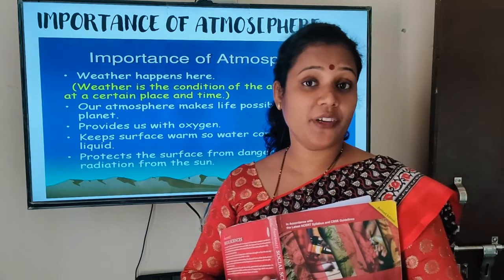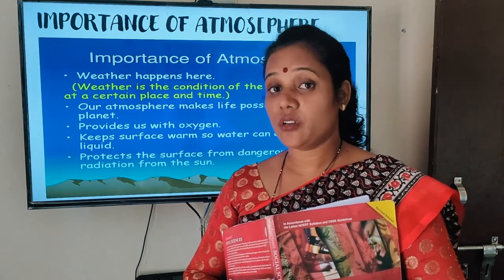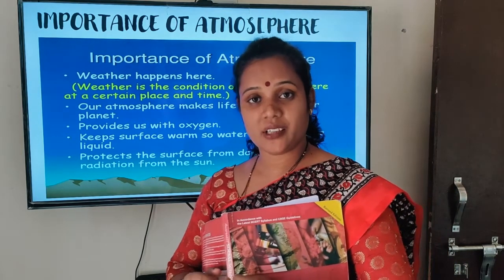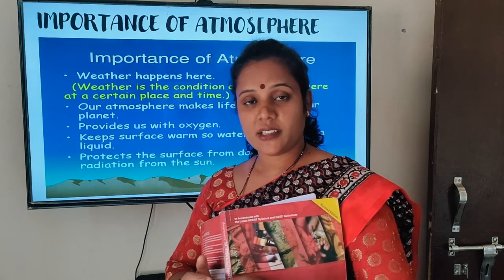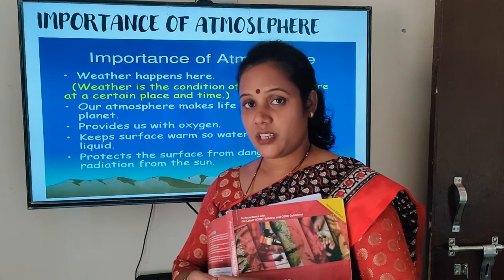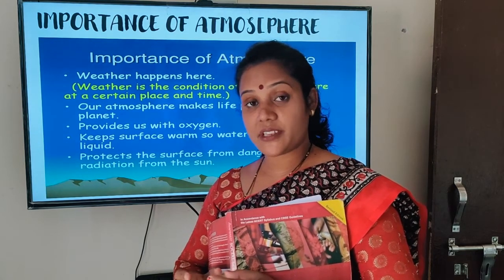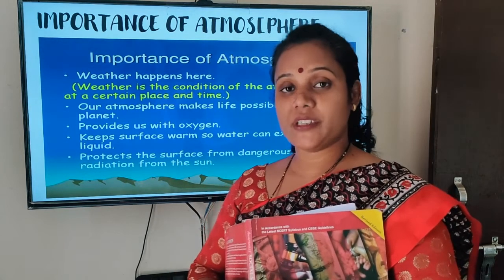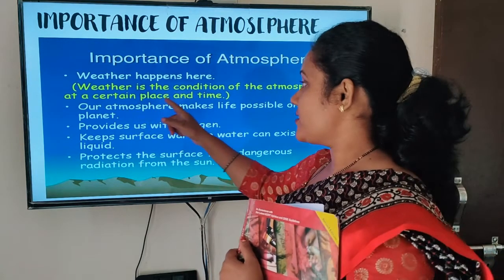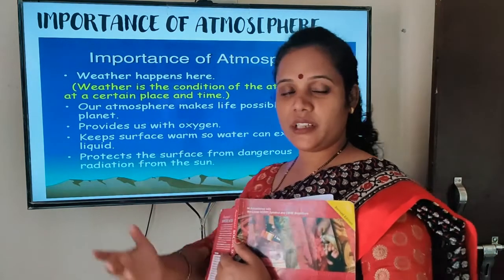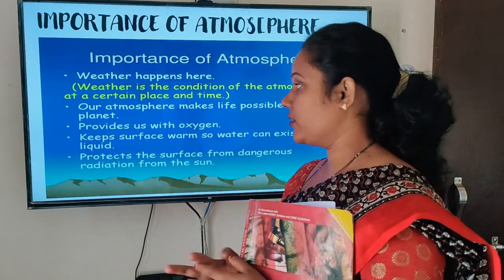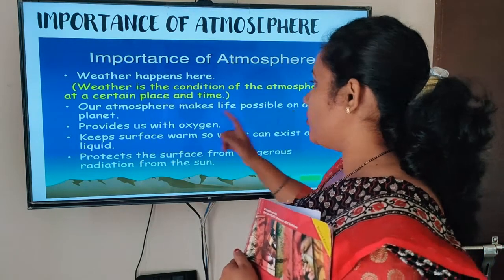It would have been very, very hot, and in very high temperatures we cannot survive. The sun is there and we are here, and in between there is a layer protecting us from all harmful and direct rays of the sun. Weather is the condition of the atmosphere at a certain place at a certain time. There are different types of climate and weather depending upon the kind of place we live in.